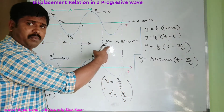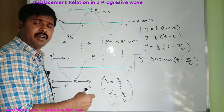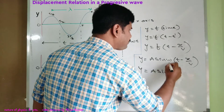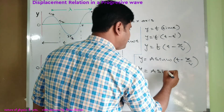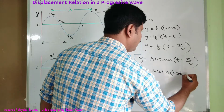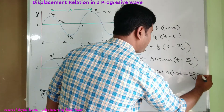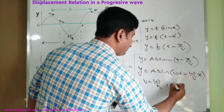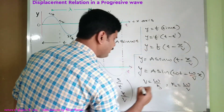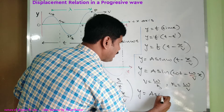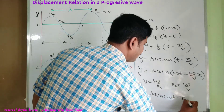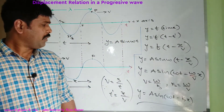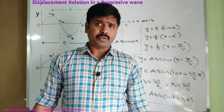So then y equals a sin(ω(t − x/v)). We already have the wave equation y = a sin(ωt), giving us the wave displacement equation: y = a sin(ωt − (ω/v)x). Since v = ω/k, we have k = ω/v, therefore y equals a sin(ωt − kx). This is the displacement relation of a progressive wave.